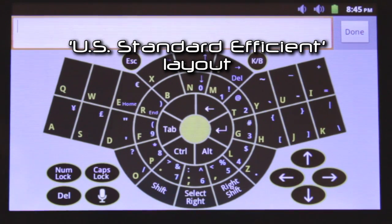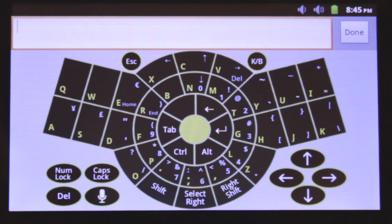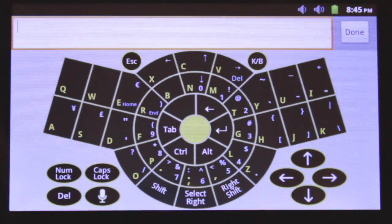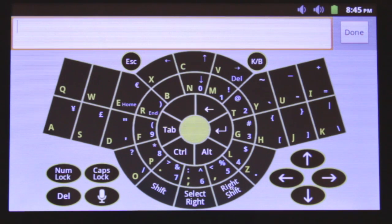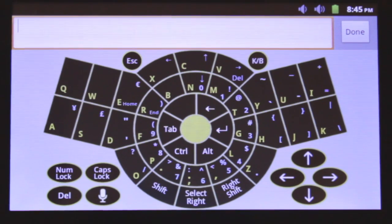The second keyboard layout option is the US standard Efficient layout. This particular layout has been optimized by B-Radar to cater for the frequency of occurrence of the alpha characters in the English language. It is designed to minimize finger travel and thereby increase the user's typing efficiency.